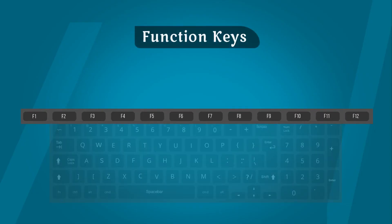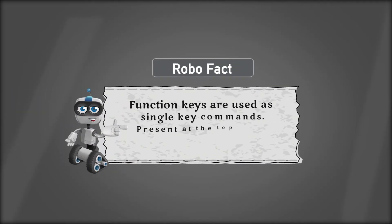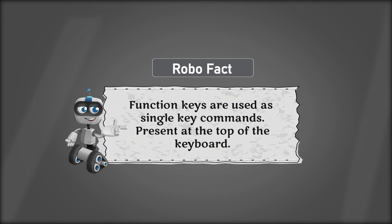Function keys: Keyboard के top पर F1 से F12 तक 12 function keys होती है। हर function key के different jobs होती है करने के लिए। Robo Fact: Function keys का use single key commands की तरह किया जाता है। ये keyboard के top पर present होती है।